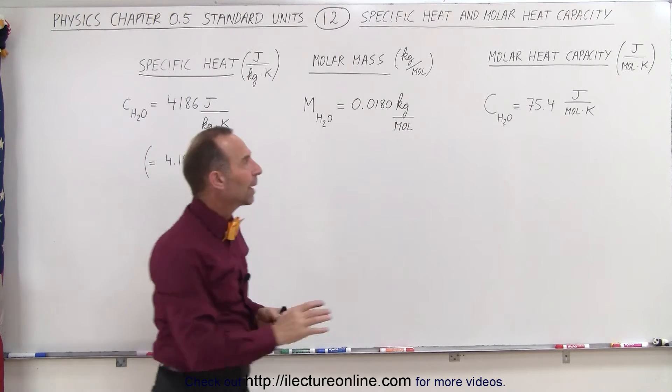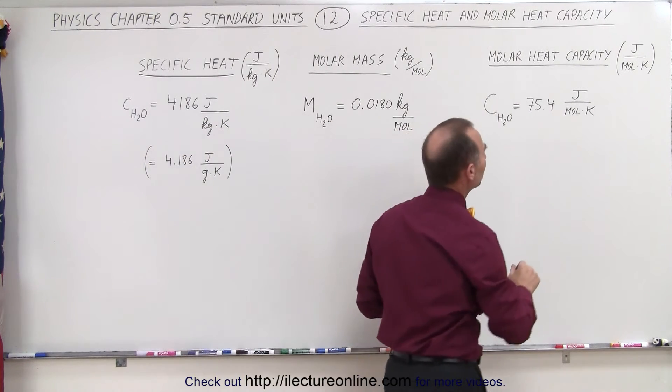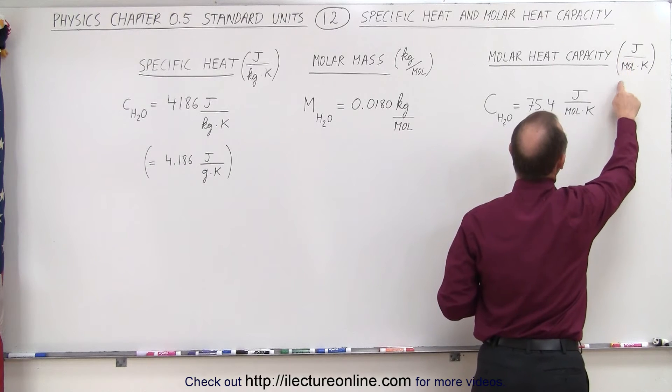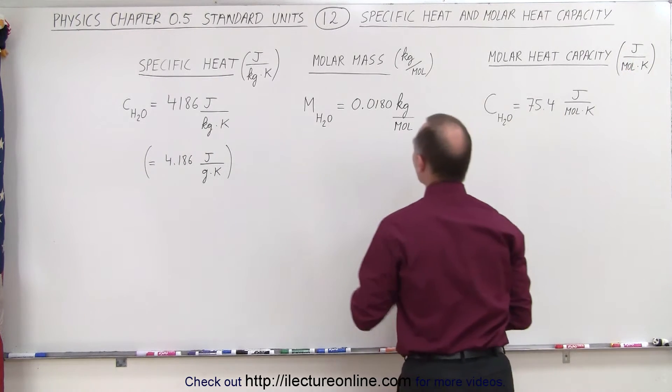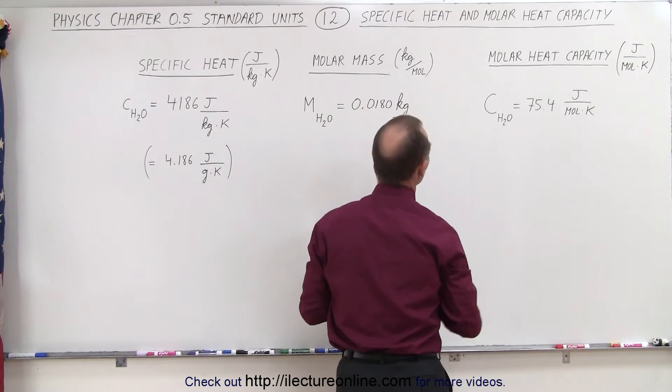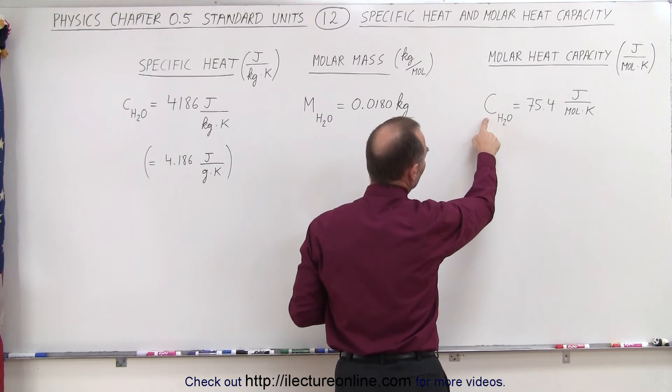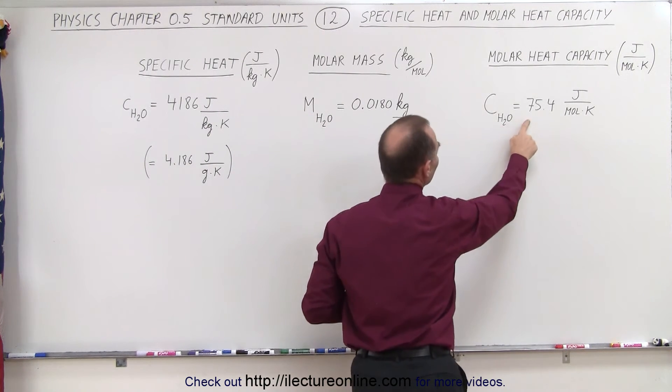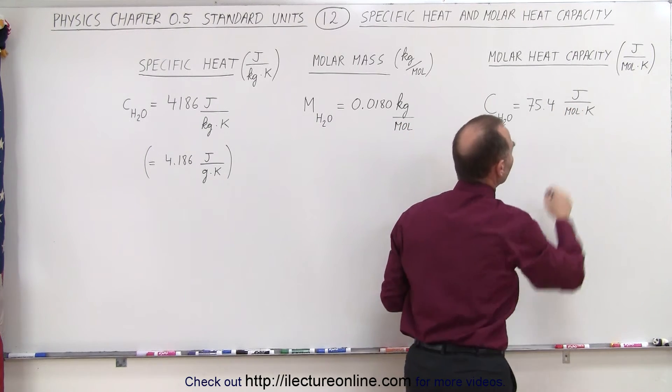Now when we talk about molar heat capacity, which has the units of joules per mole per kelvin, that is actually the product of the specific heat times the molar mass. We use a large capital letter C for water, it is 75.4 joules per mole per kelvin.